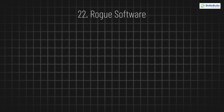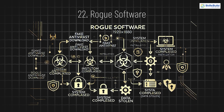22. Rogue Software. Rogue software masquerades as a legitimate program, like a fake antivirus, but is actually designed to harm your system. Once installed, it may steal data or cause other damage to your computer.